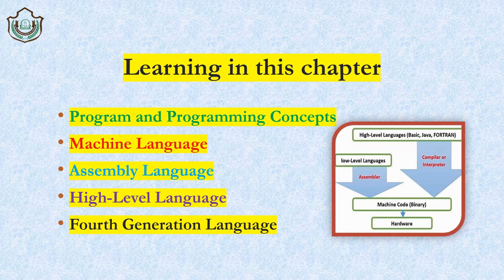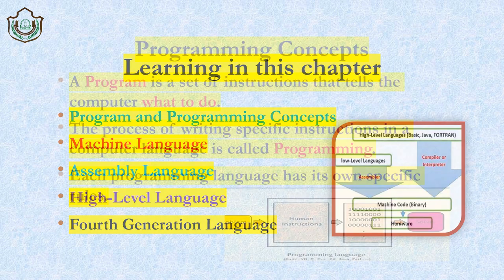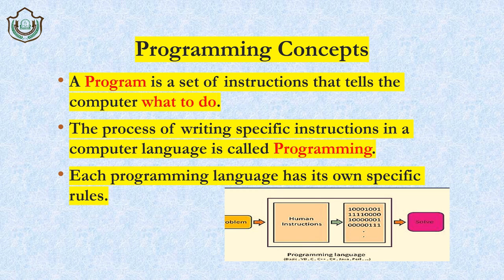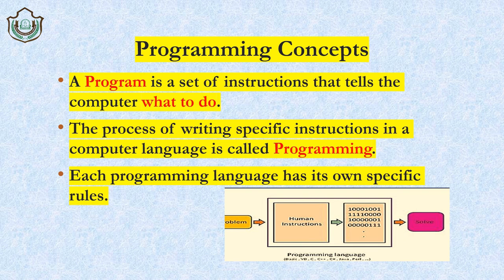Let's start with programming concepts. A program is a set of instructions that tells the computer what to do. A computer cannot do work on its own, so we have to instruct it. For example, if I instruct you to sit straight in class, you follow that instruction. Same with a computer — we give it a set of instructions so it knows what to do.